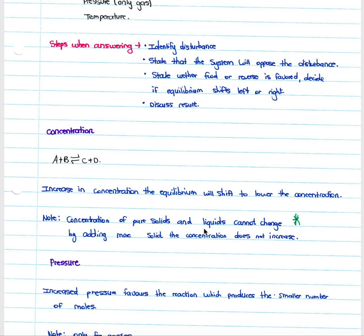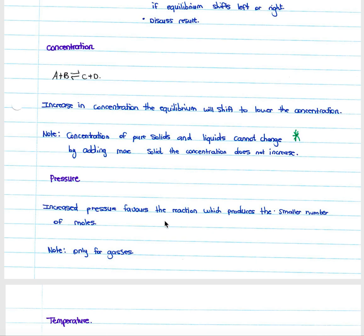When looking at pressure, an increase in pressure favors the reaction which produces the smaller number of moles of gas. For example, if the forward reaction produces four moles of gas and the reverse reaction produces two moles, increasing pressure would favor the reverse reaction to produce two moles. Decreasing pressure would favor the side with more moles — the forward reaction. Note this is only applicable to gases; if reactants are not in gas form, a change in pressure will not affect the equilibrium point.